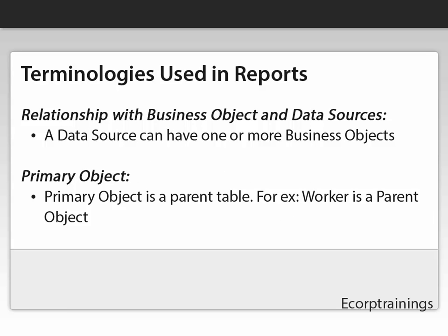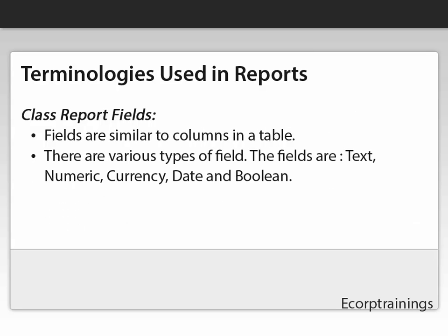Regarding the relationship between business objects and data sources: a data source can have one or more business objects. The primary object is a parent table. Coming to report fields — fields are similar to columns in a table.